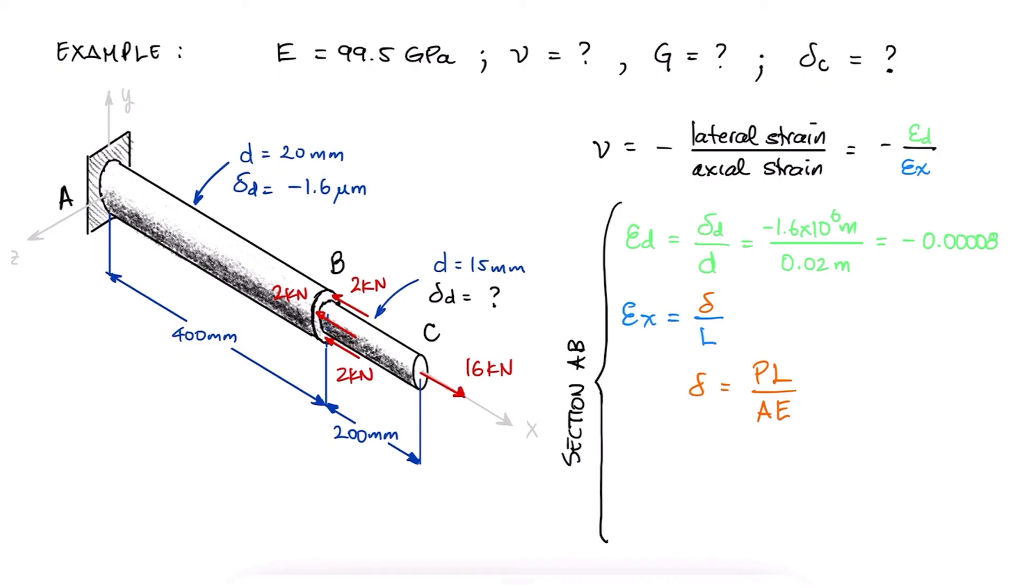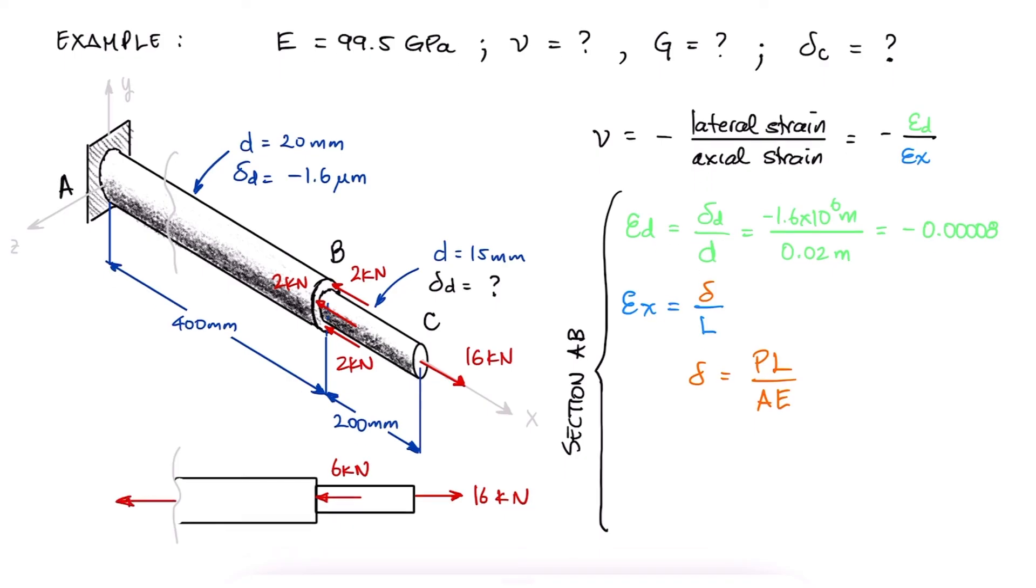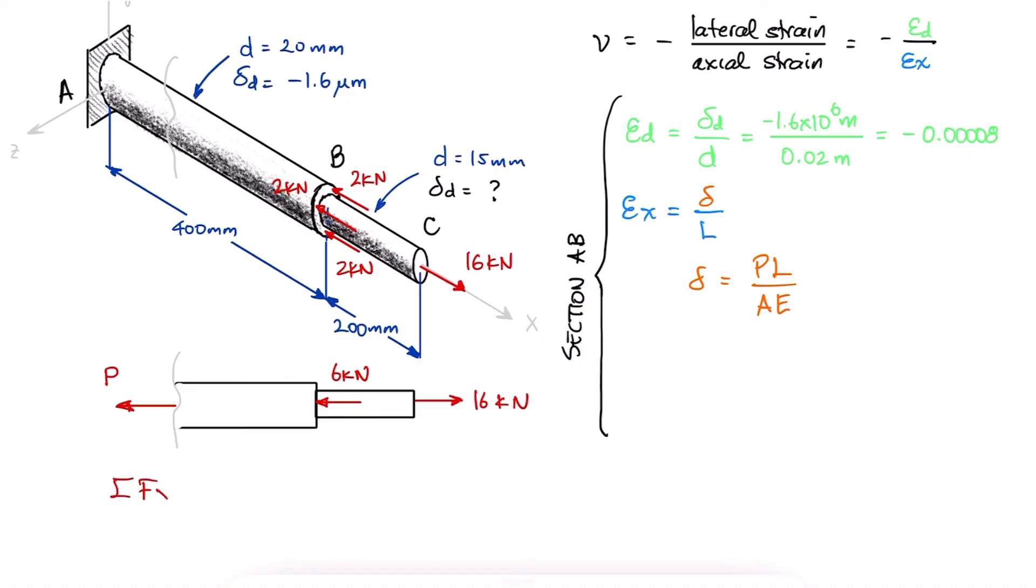To find the internal force P that we would use for this expression, we'd draw a free body diagram of a cut anywhere between A and B to find that internal force, and since we don't have the reaction force at the wall A, we'll use the geometry from C to the cut. This shows us that the internal load P, which we always assume in the direction of a tensile force, so that positive is tension and negative is compression, just like the convention, is equal to positive 10 kilonewtons.